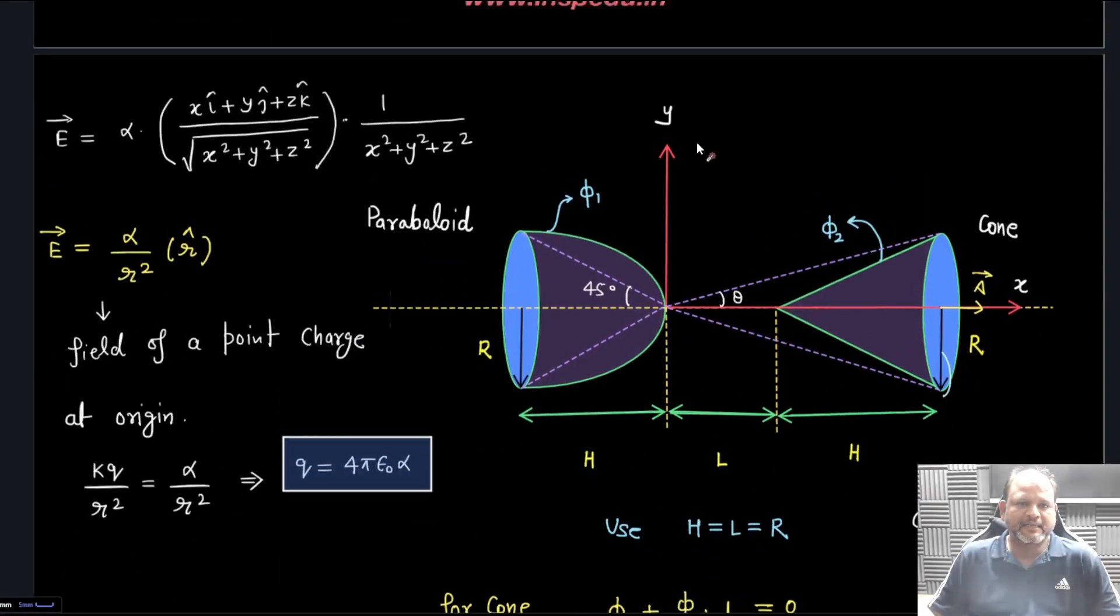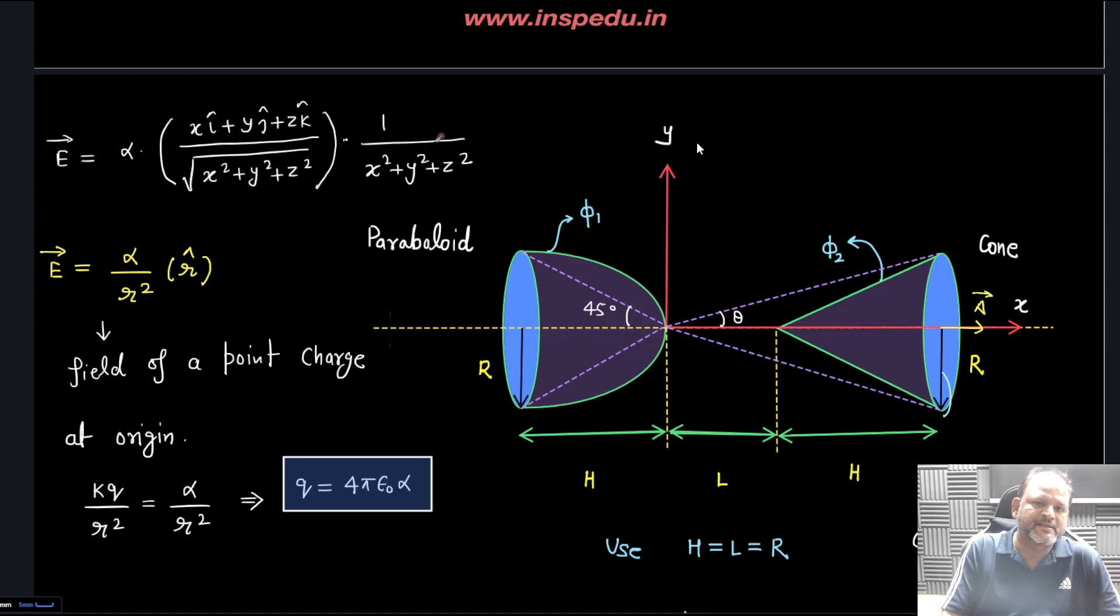First thing - most of you were able to understand that this electric field resembles the field of a point charge. This becomes r̂ and this becomes r², so it is like α/r² times r̂. It's a radial field in 3D and we can compare it with point charge where expression was KQ/r² times r̂.